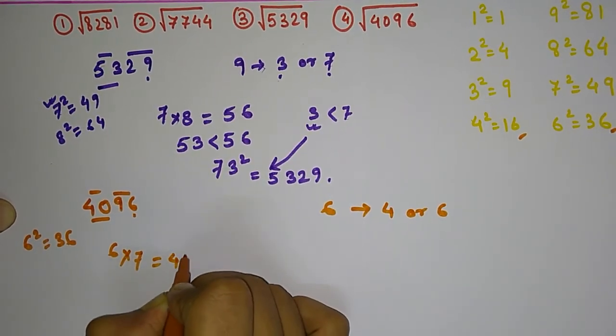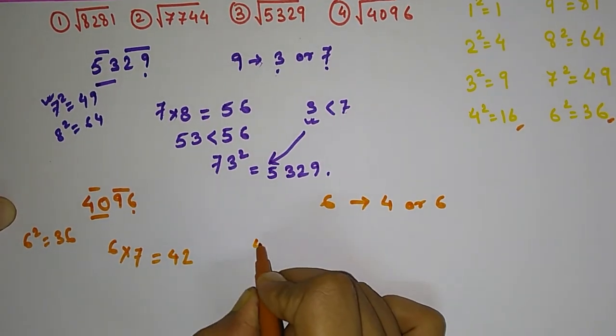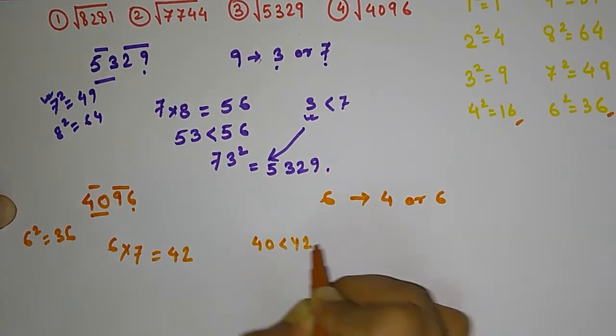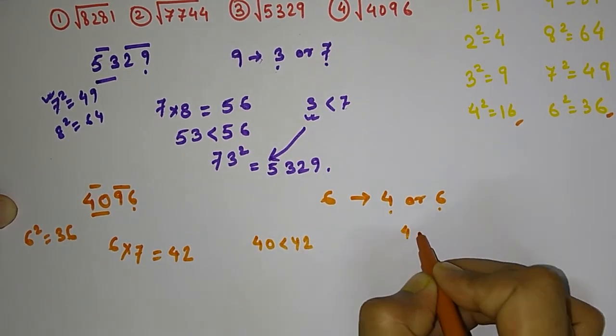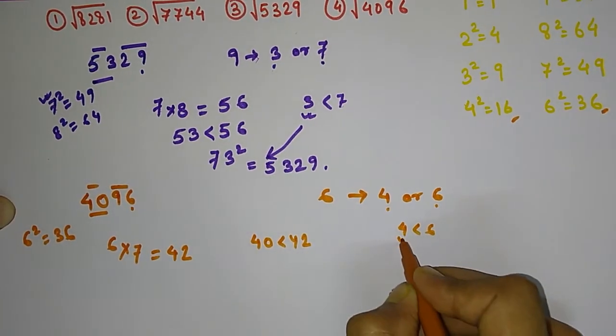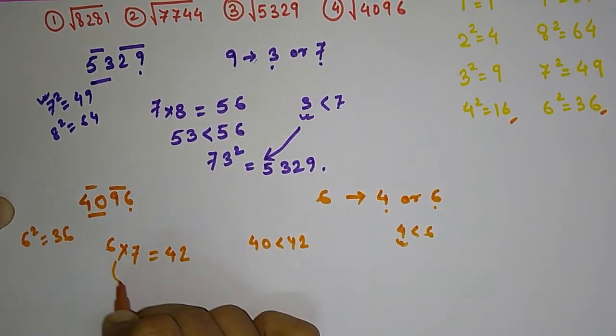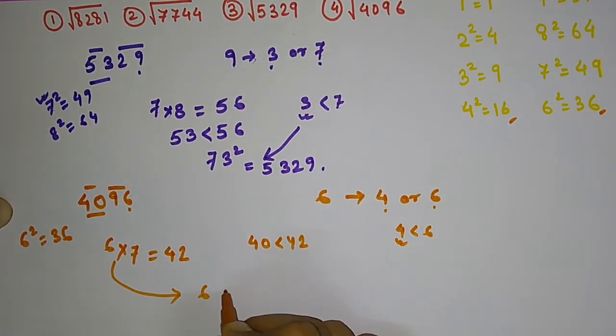Now since 40 is less than 42, we are going to take the smaller of 4 or 6, that is 4. So our answer will be 6 and 4. 64 squared equals 4096.